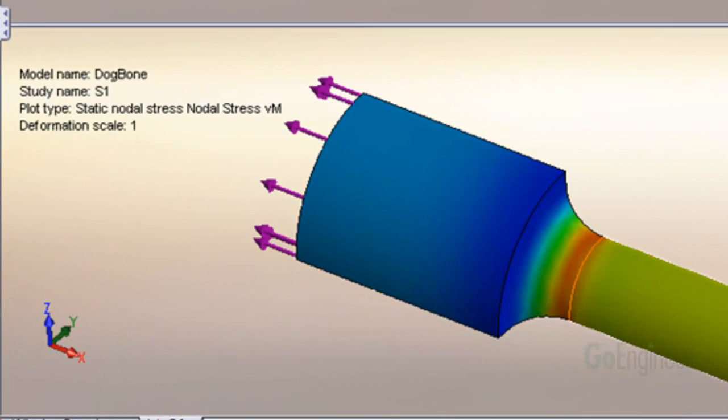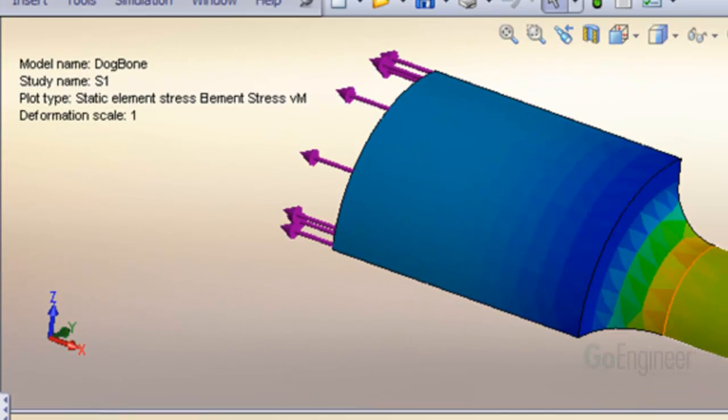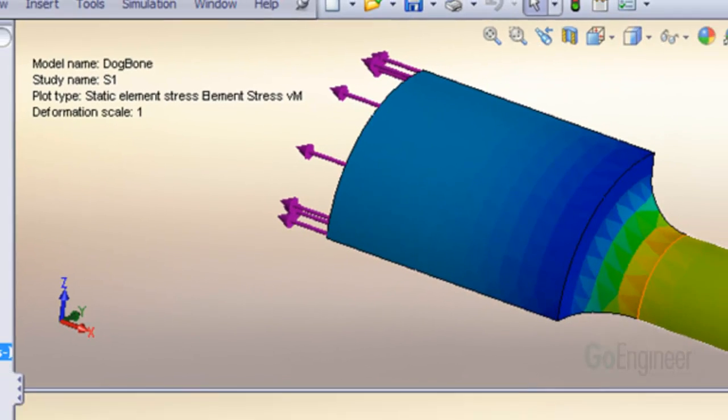The default stress plot is nodal stress as shown here. Notice the smoothness of the color contours. The element stress plot has a more segregated appearance to it.